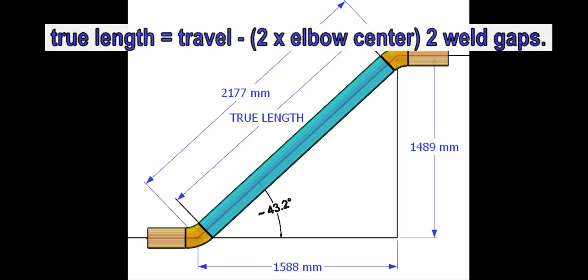The true length formula is the travel minus the sum of two elbow centers and two weld gaps. Here, I assumed one weld gap is 3 millimeters.